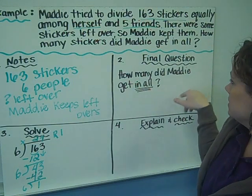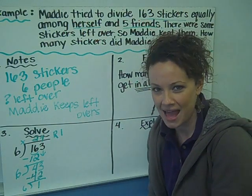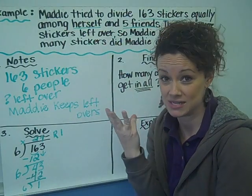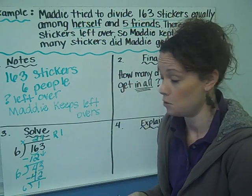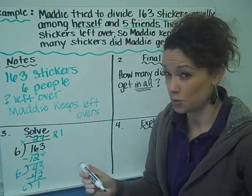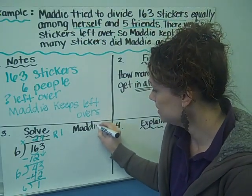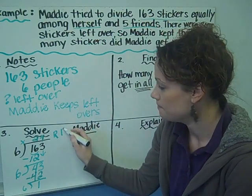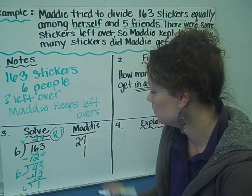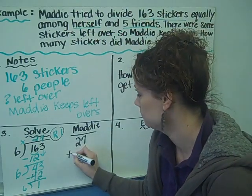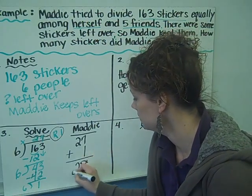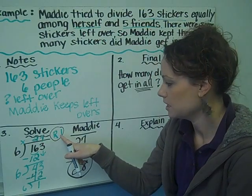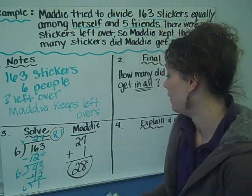Now look at the final question: how many stickers did Maddie get in all? Does 27 remainder 1 answer that? Not yet — this is a two-step problem. Maddie receives 27 stickers from the equal share, and she keeps the leftover remainder of 1. So 27 plus 1 equals 28. Maddie gets 28 stickers in all. That answers our final question.